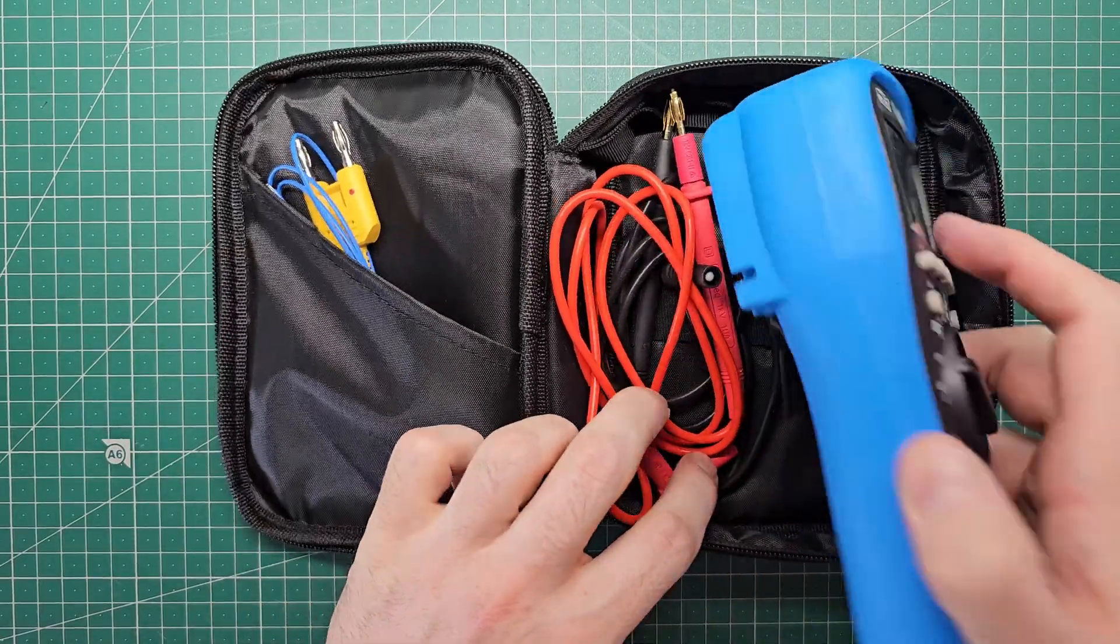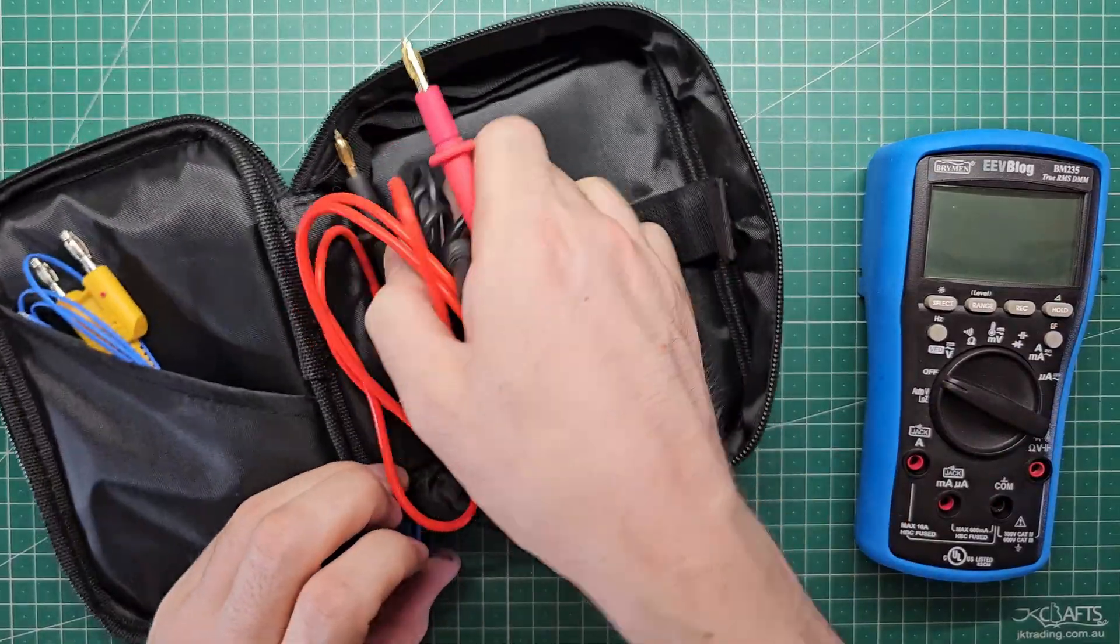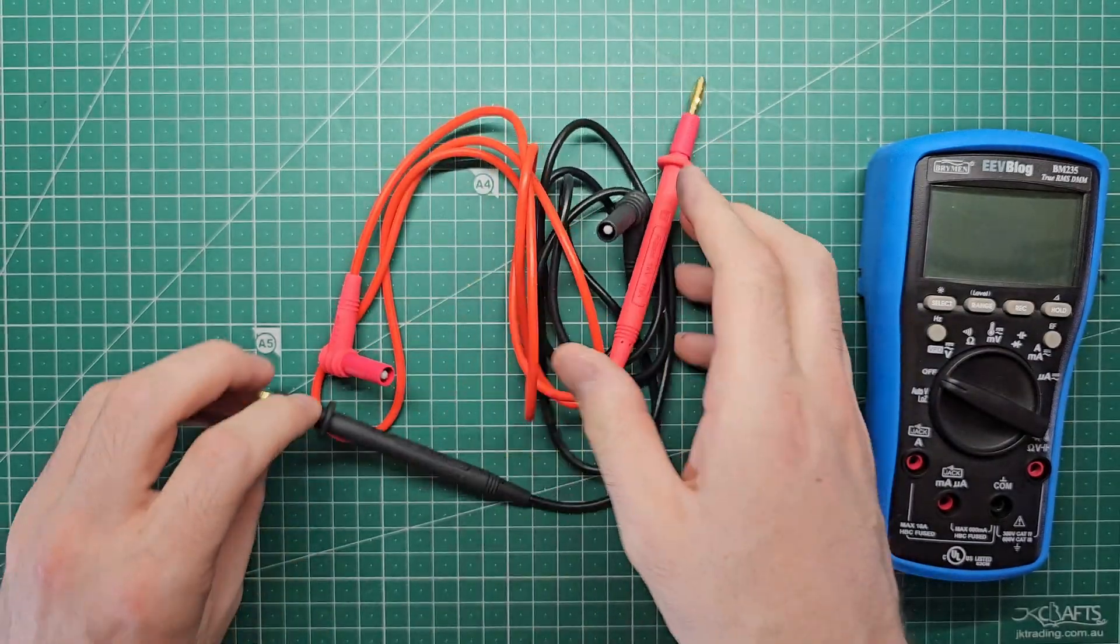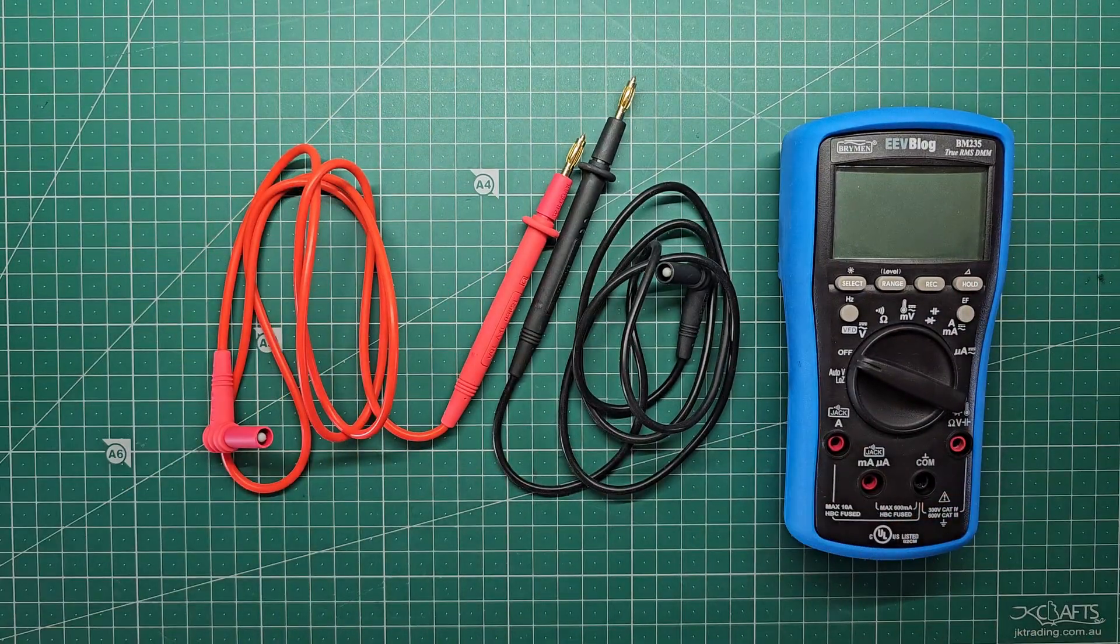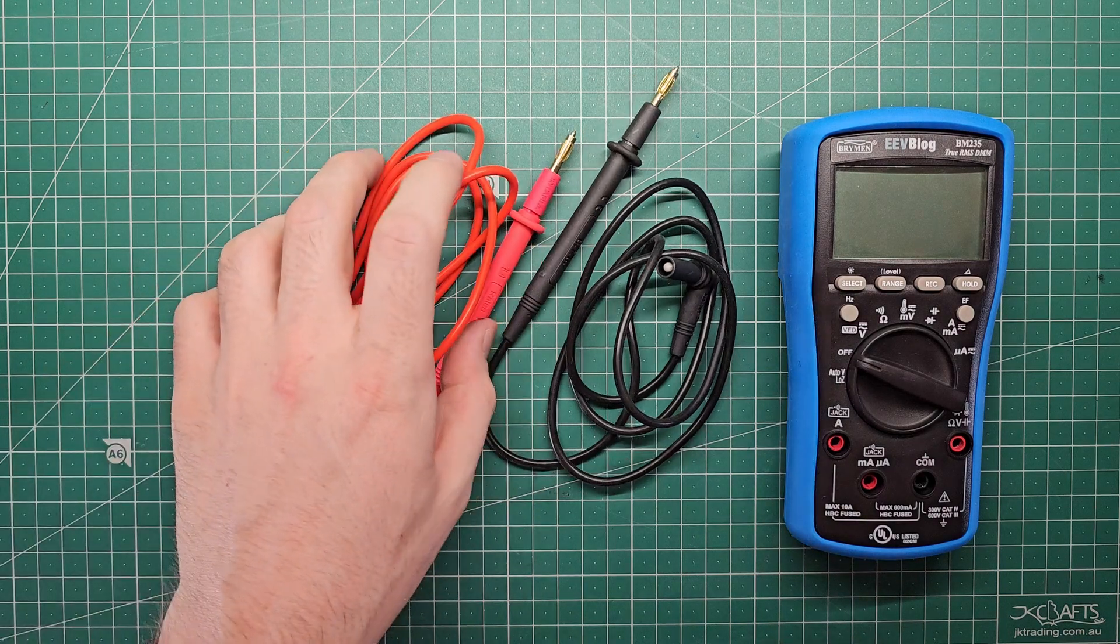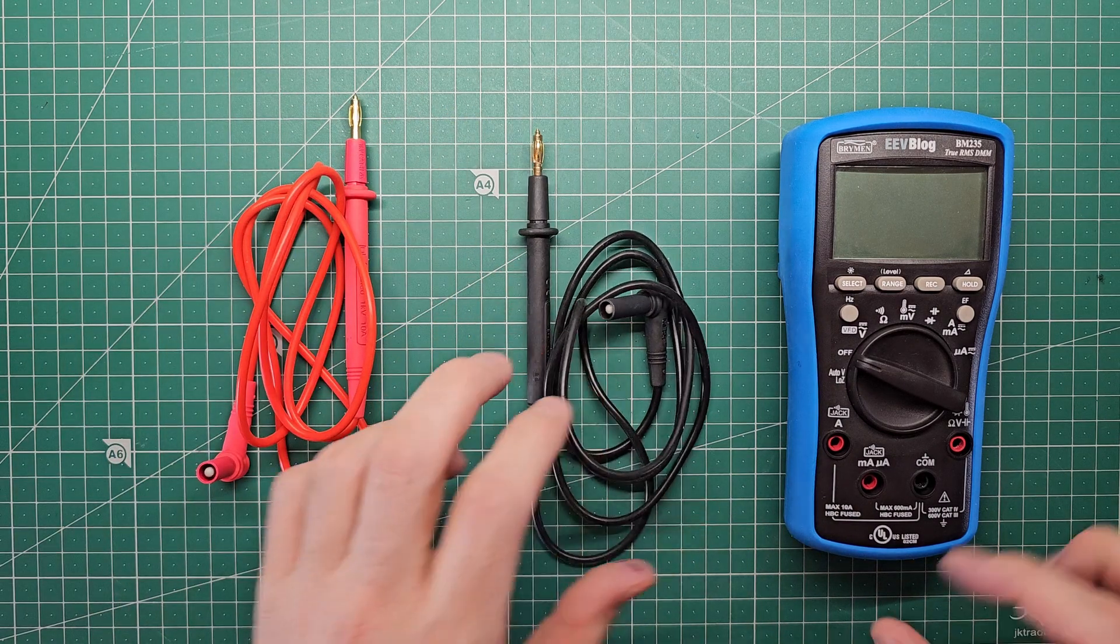A digital multimeter is one of the most useful tools that any electronics engineer or hobbyist can have in their toolkit. They can be used for doing all sorts of different electronics measurements like voltage, current, resistance, and more, and today I'm going to show you how to use one. My name is Luke and this is Terminal Curiosity.